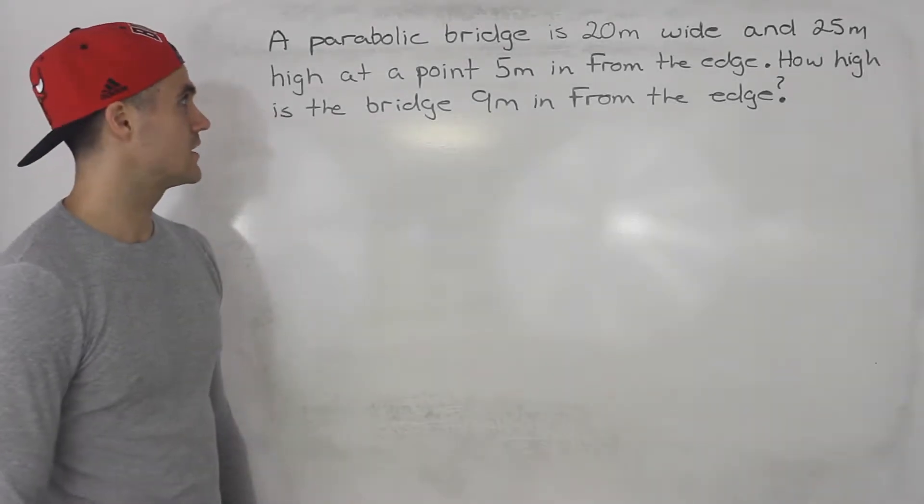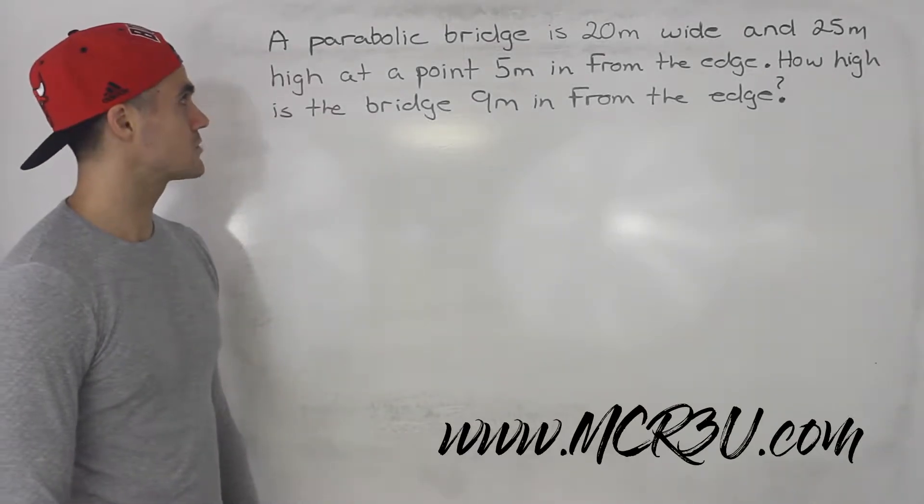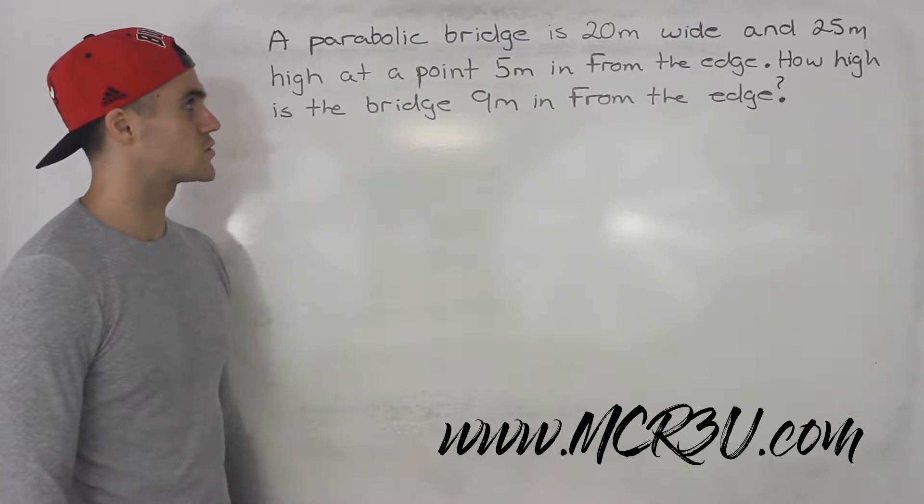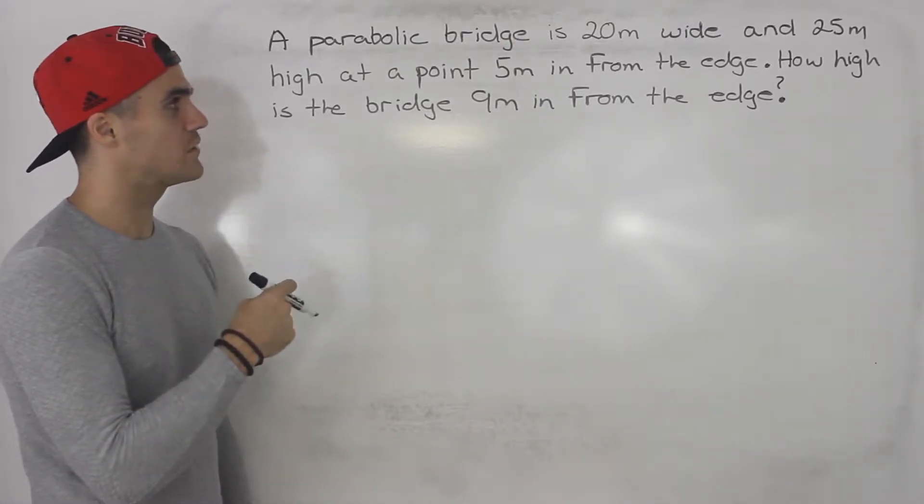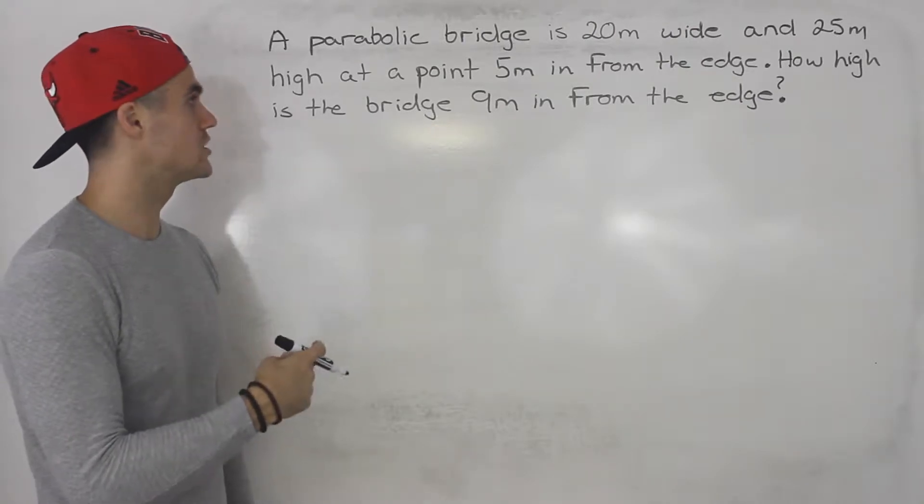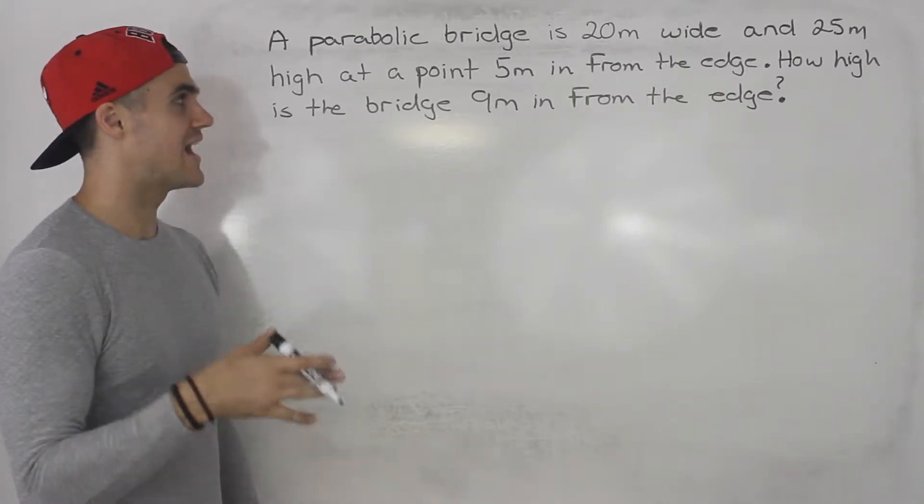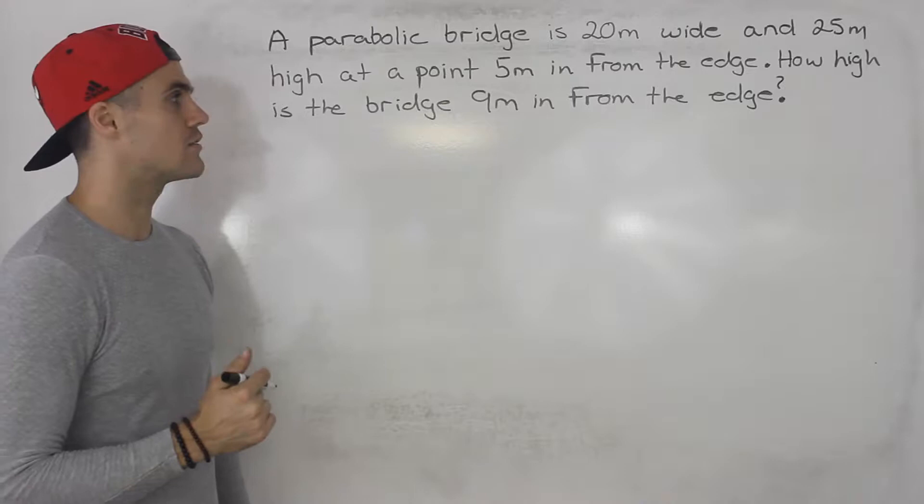Welcome back guys. In this video we have a word problem. So we're told a parabolic bridge is 20 meters wide and 25 meters high at a point 5 meters in from the edge. How high is the bridge 9 meters in from the edge?